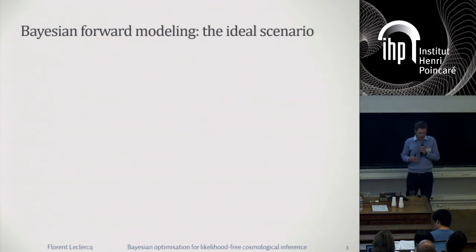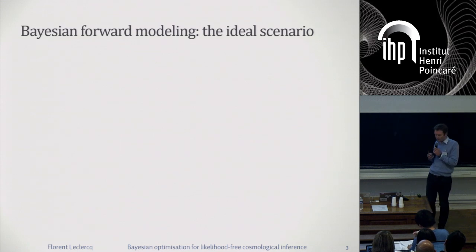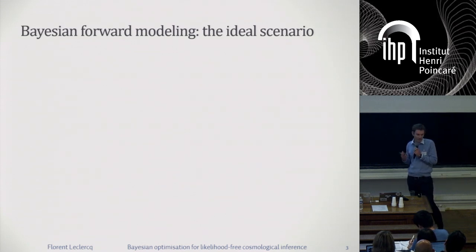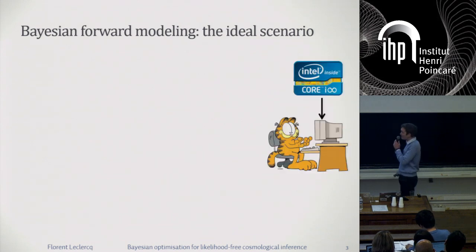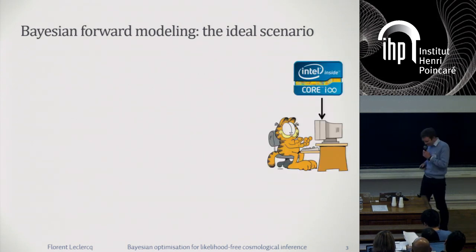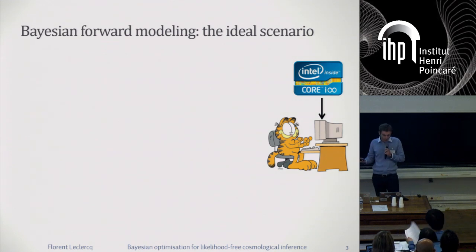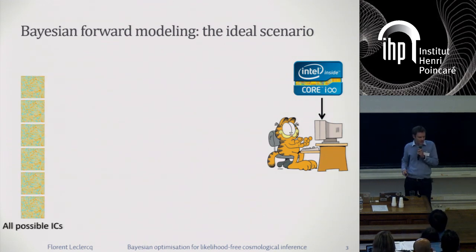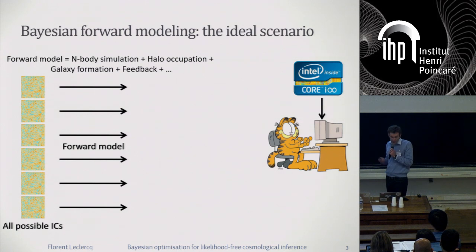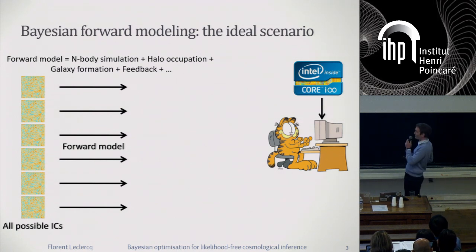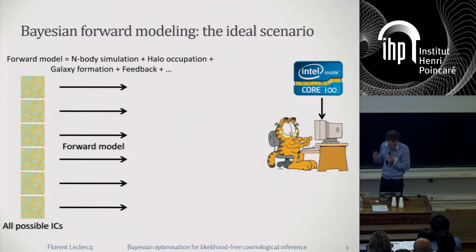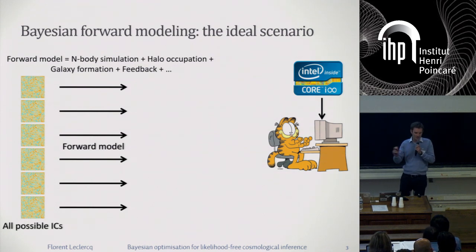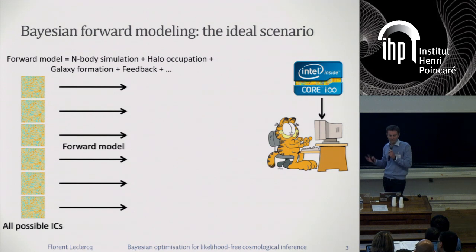Let me start with a thought experiment. In the ideal scenario, I would have an infinitely powerful computer. We'll do Bayesian forward modeling: we set up on our hard drive all possible initial conditions for the universe, and we run them forward with the help of simulators. This forward model can involve a galaxy N-body simulation, and we can refine to put our galaxies in there — halo occupation, galaxy formation, feedback of the central black hole and its environment, etc. Here it's all fine because the computer is infinitely powerful.